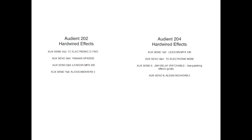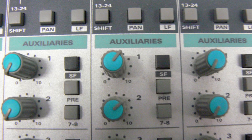Firstly, you'll need to decide which effects units you want to use. This list outlines the auxiliary sends that are connected to each piece of outboard. For this example, we'll connect up the TC Electronic D2 found in Audient 202. The auxiliary sends for the TC D2 are auxiliaries 1 and 2.